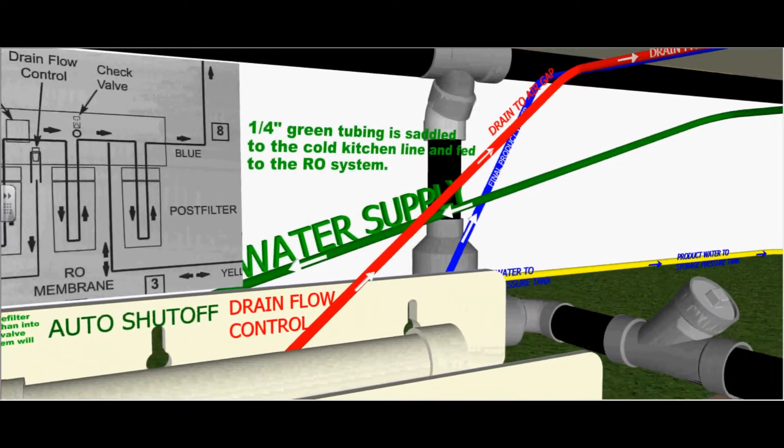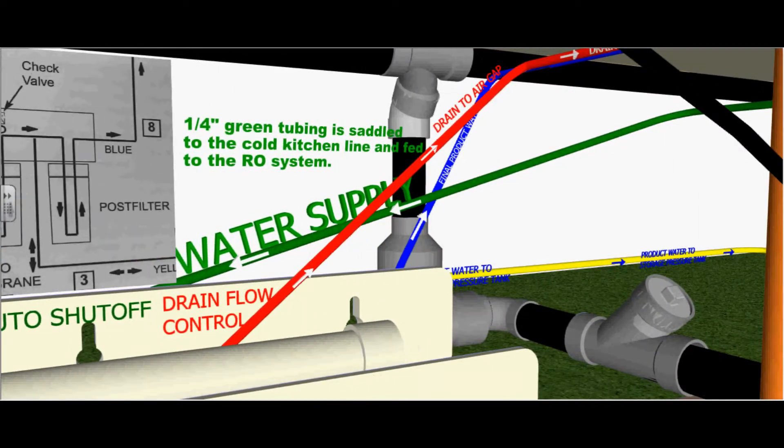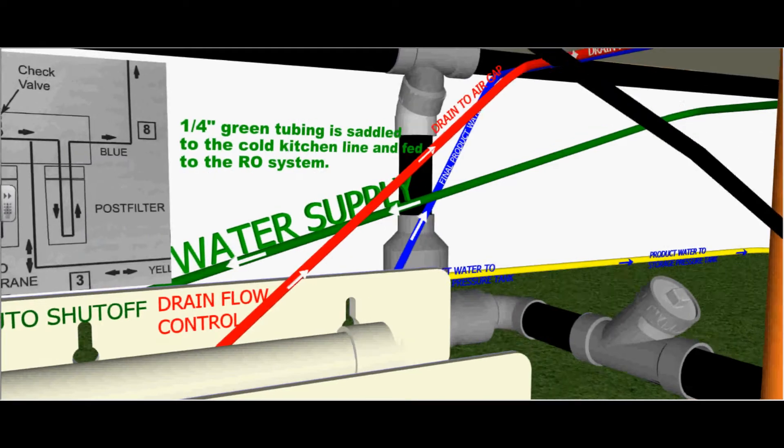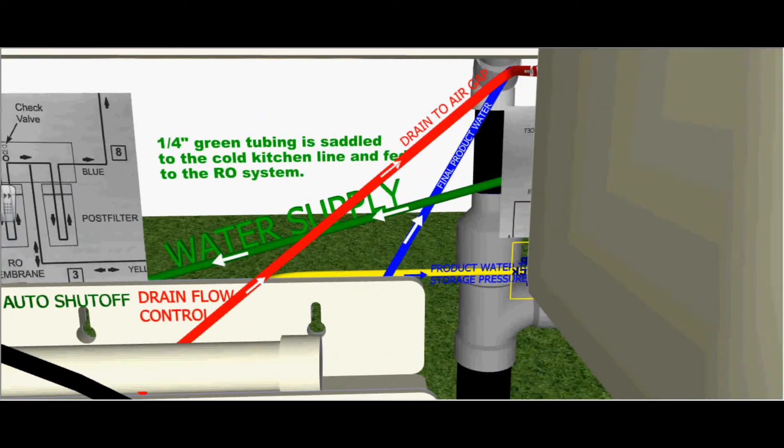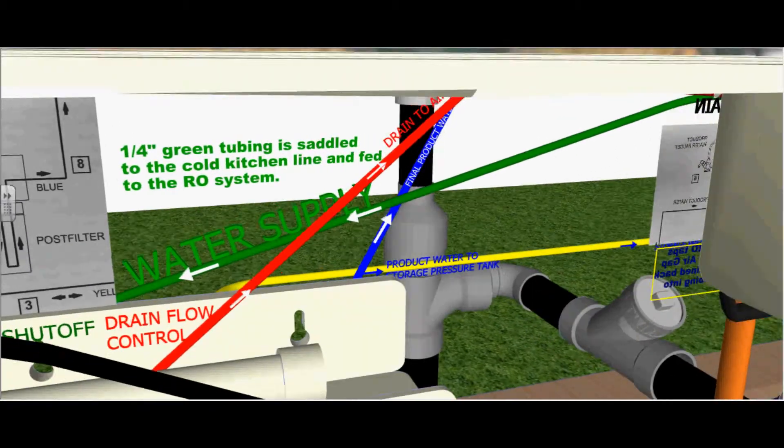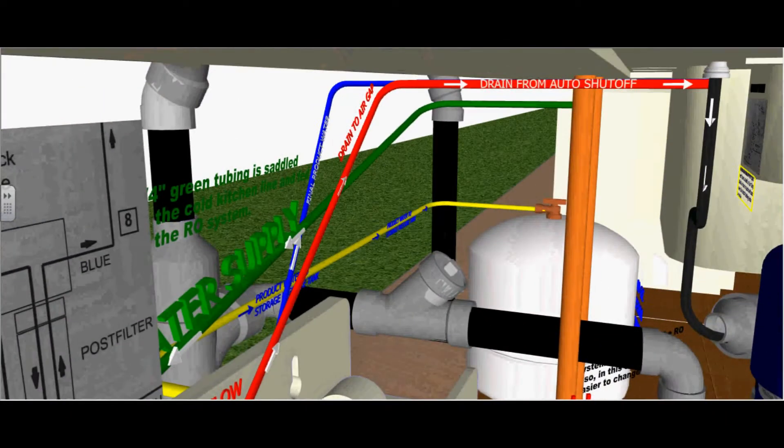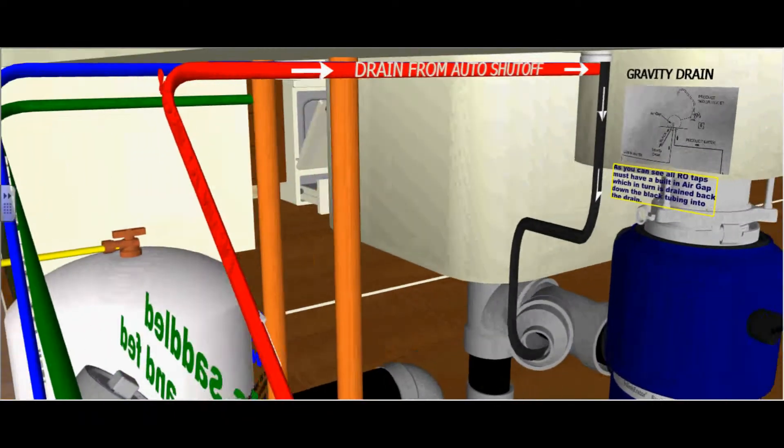After the ASO valve, it runs through the drain flow control, which is the red tubing. That red tubing is the waste water which is drained up to the air gap faucet or RO faucet. As you can see, it's the drain from the automatic shutoff.